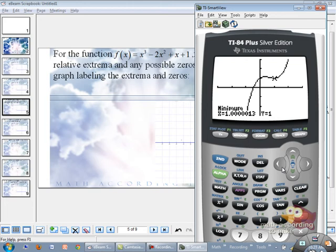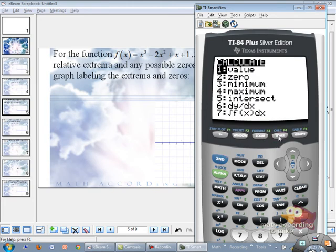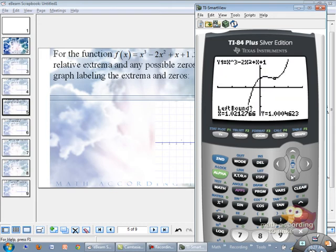The last up is the zero. If you go to second calc, second option there is zero. Remember, that's fancy talk for your x-intercept. If we hit enter, we're asked the exact same three questions. Left bound, right bound, guess. So our zero is approximately right here. So what we're going to have to do is we need to go to the left of where it crosses, to the right of where it crosses, and then hit enter on where it crosses.